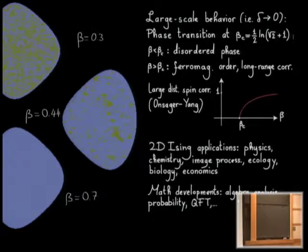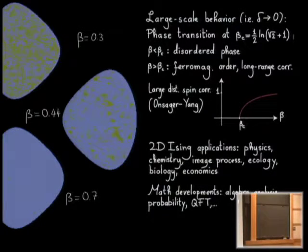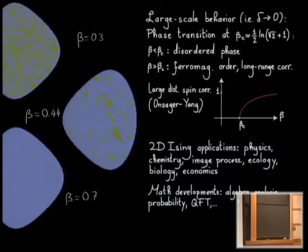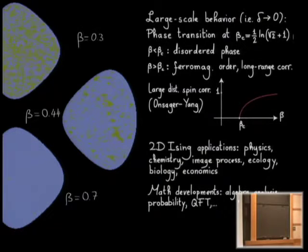Today I want to speak mostly about what happens at this very value of beta — exactly at the critical point where local spin interactions start producing long-range alignment. Here is a picture of what it looks like: something intermediate between the ordered and disordered phases, with a kind of fractal-looking structure, which looks very intriguing. For some reasons, this phase describing the phase transition has remained, from a mathematical perspective, a bit less well understood than the other phases.